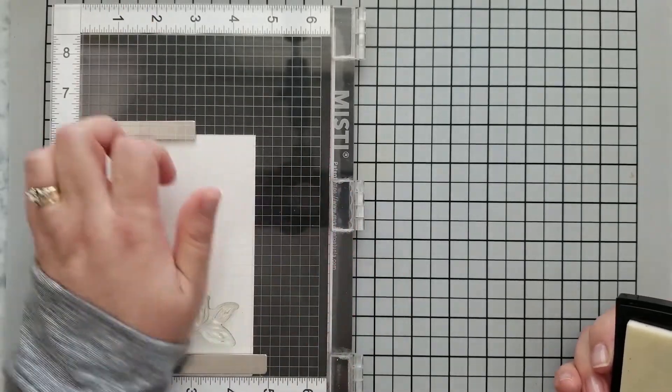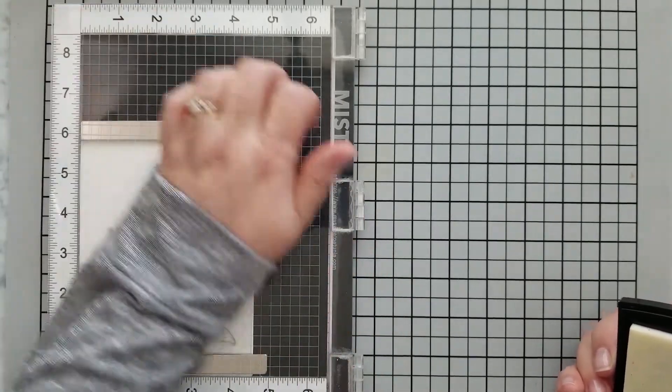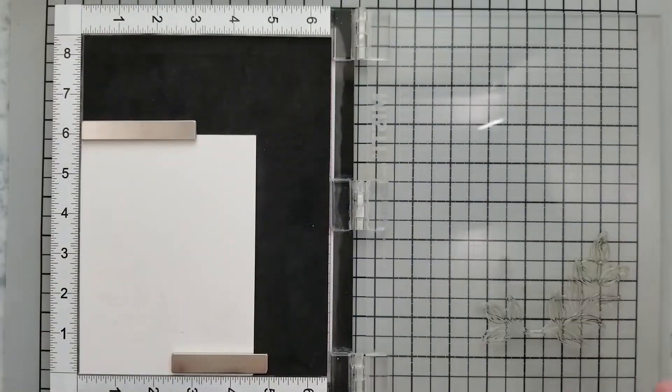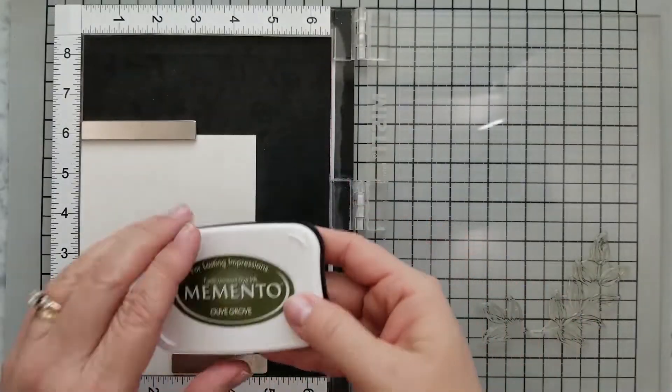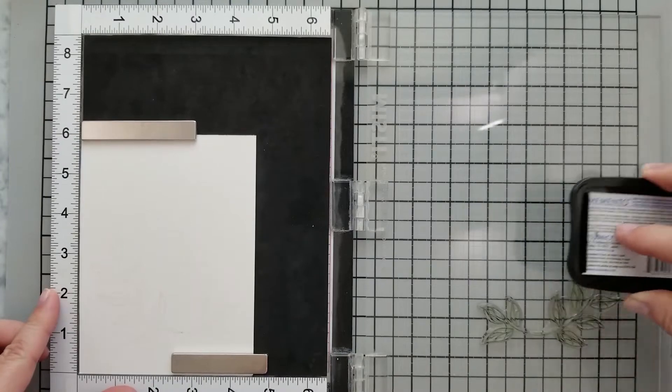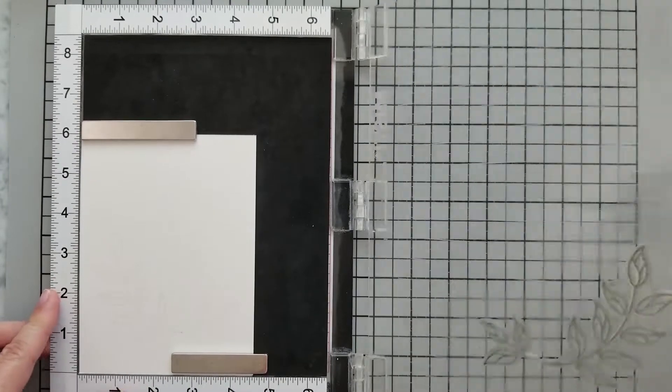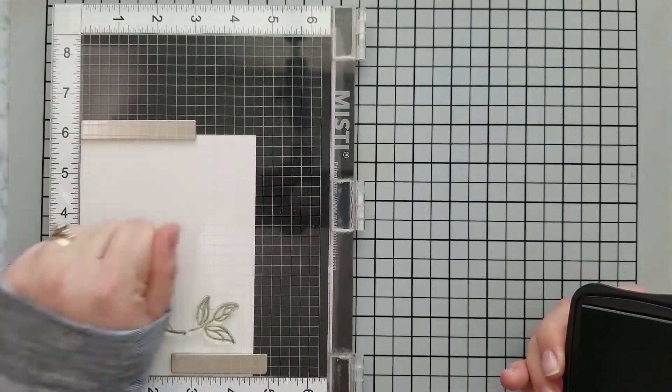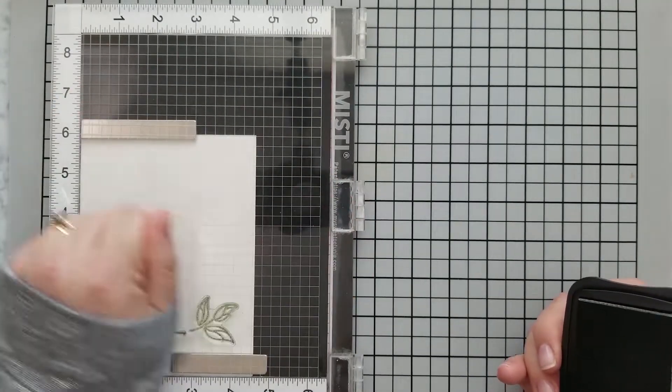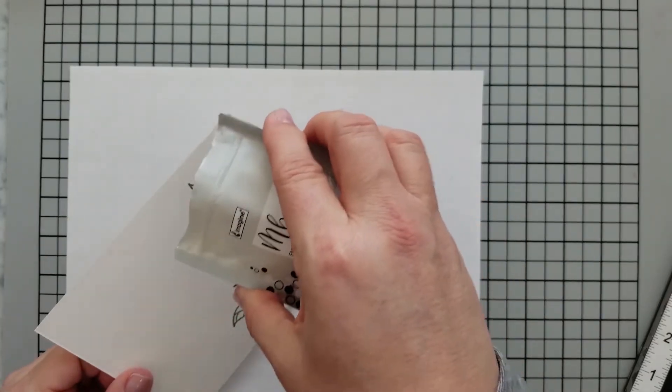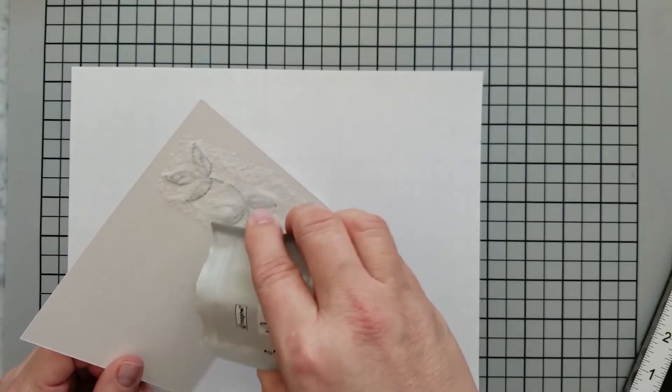You can see I have my watercolor paper in my MISTI. I've laid down anti-static powder—this is heavy watercolor paper so it has a lot of texture. I'm going to stamp the image several times, first with my Versamark ink, and then once I feel like my image is completely stamped, I'm going to go over that with my Olive Grove ink. Then we're going to cover it with clear embossing powder and heat set that.